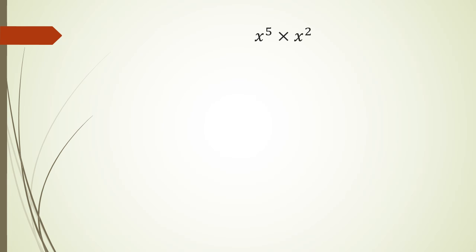If I was to do this the long method, I would have to do it like this. So x to the power of 5 is x times x times x times x times another x, and then x squared is going to be x times x. If we actually count the number of x's we have, we've got 7, so this could be written as x to the power of 7.